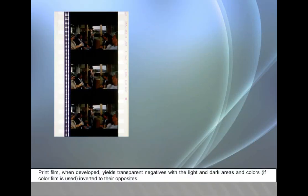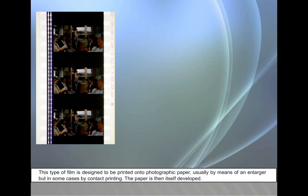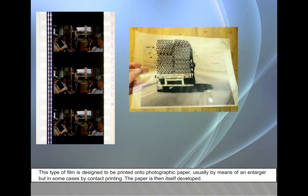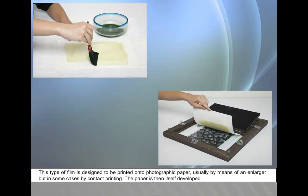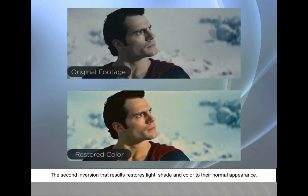Print film, when developed, yields transparent negatives with the light and dark areas and colors, if color film is used, inverted to their opposites. This type of film is designed to be printed onto photographic paper, usually by means of an enlarger, but in some cases by contact printing. The paper is then itself developed. The second inversion that results restores light, shade, and color to their normal appearance.